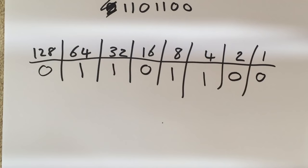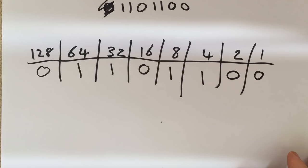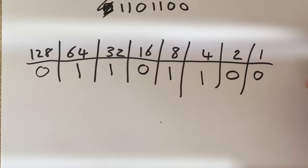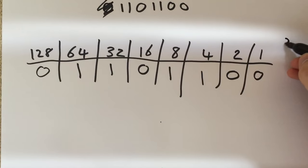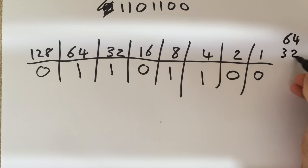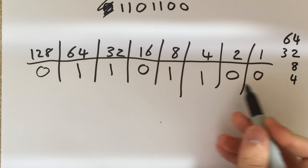Starting off: Do we need 128? Nope. Do we need 64? Yes, so I write out 64. Do we need 32? Yes, so I write out 32. Do I need 8? Yes. Notice I'm keeping my columns here because I'm going to be adding these up. Do I need the 4? Yes. Do I need anything else? No. So in fact it's just these numbers that I'm going to have to add up.